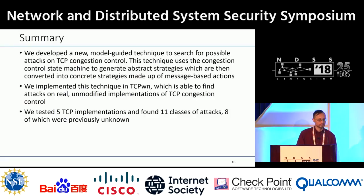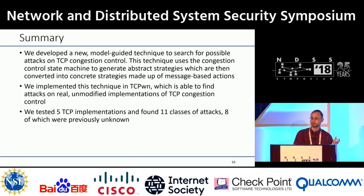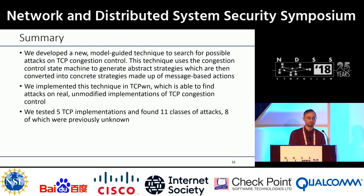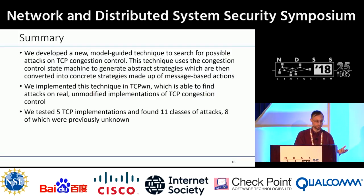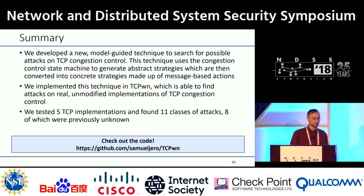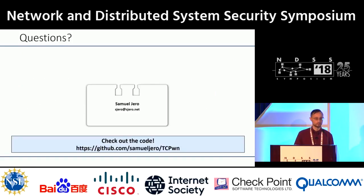In summary, we've developed a new model-guided technique to search for possible attacks on congestion control. This technique uses the congestion control state machine to generate abstract strategies, which we convert to concrete strategies made up of message-based actions. We implemented this as TCPwn, which finds attacks on real implementations of congestion control. We tested five implementations of TCP, finding 11 classes of attacks, eight of which were previously unknown. We've also open-sourced this system — you can check it out on my GitHub. Thank you very much, and I'd be happy to take any questions.